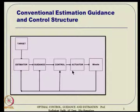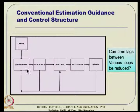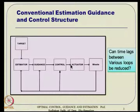When somebody talks about estimation, they typically ignore everything inside the guidance and control loops. Similarly, guidance ignores everything else, and control does the same. The question is: can the time lag between various loops be reduced? When you have loops after loops, inner loops must be sufficiently faster than outer loops. So control has to be slower than actuator bandwidth, guidance even slower, and the estimator slower still.